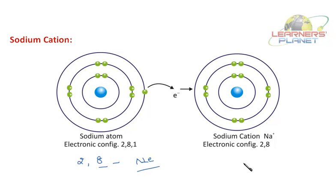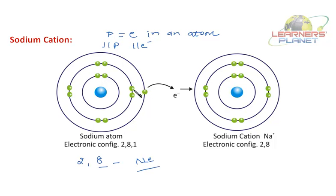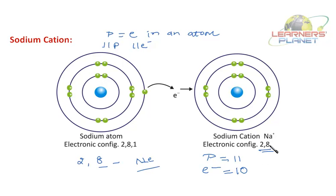Why does the sodium cation have a positive charge? In a sodium atom, the number of protons equals the number of electrons, both equal to 11. When it loses one electron, it forms a sodium cation in which the number of protons is still 11 but the number of electrons is now 10. So it has formed a sodium cation with electronic configuration 2, 8 — that is, 8 electrons in its outermost or valence shell.